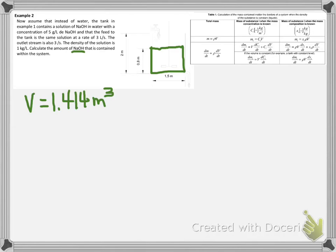Now, what we know in this case is the concentration of sodium hydroxide, which is 5 grams per liter in our system. So we will use the equation given for this case